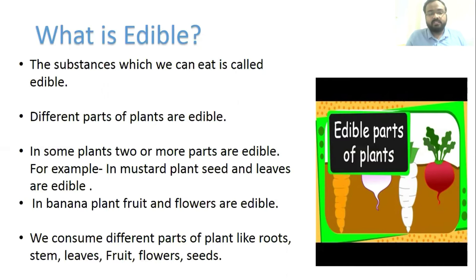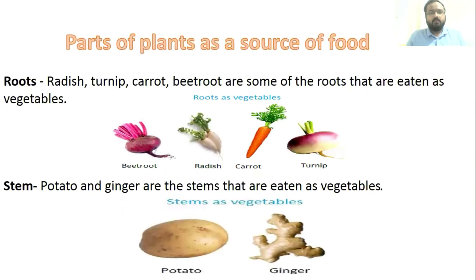We consume different parts of plants, such as roots, stem, leaves, fruit, flowers, and seeds. Now let us discuss each part of the plant as a source of food.